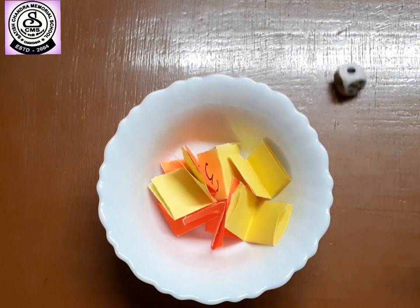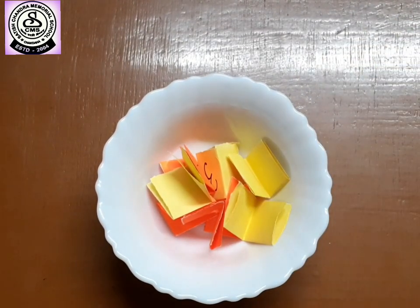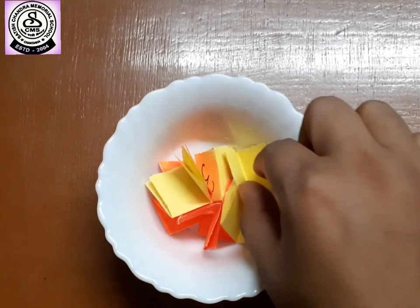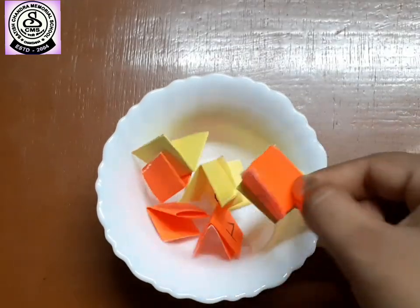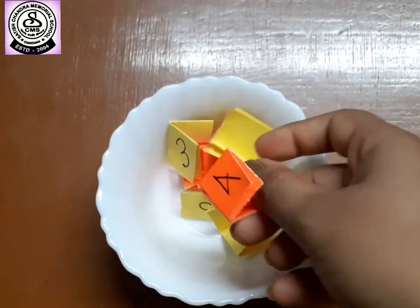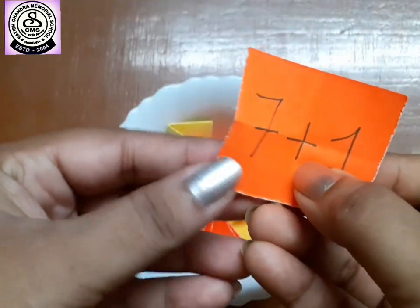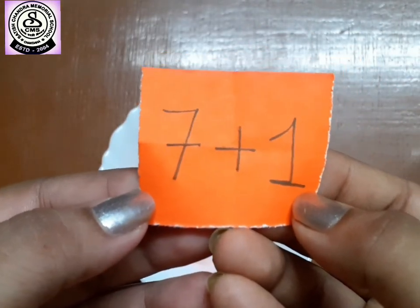Like this, again, you roll the dice, get the number and find from here. Four. So, at number four, what do we have? Where is number four? We have got number four here. So, inside that, we have seven plus one.